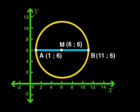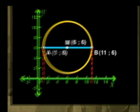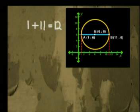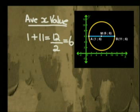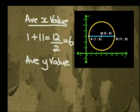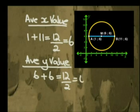Now let's go back to our points on the line segment. The x value of A is 1 and the x value of B is 11. If you add them together and divide by 2, we get the average x value, which is 6. Now if we look at the diagram, the x coordinate of the midpoint is halfway from the first x value to the second x value, at x equal to 6. So the x value of the midpoint is the average of the x values of the endpoints. Now the y values — if we take the average of the y values, it will be 6 plus 6, and that answer divided by 2 is 6.